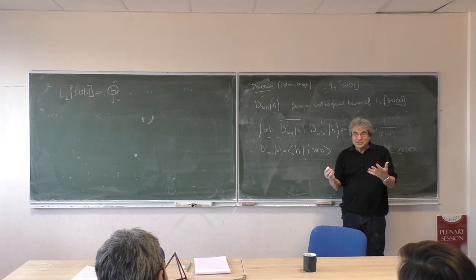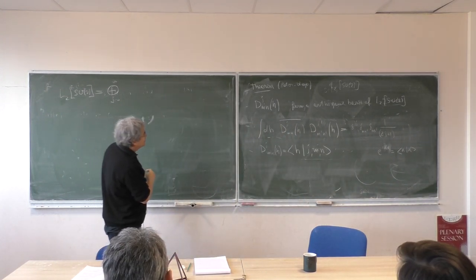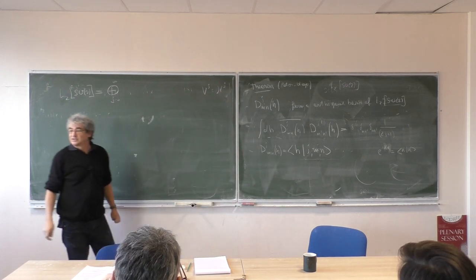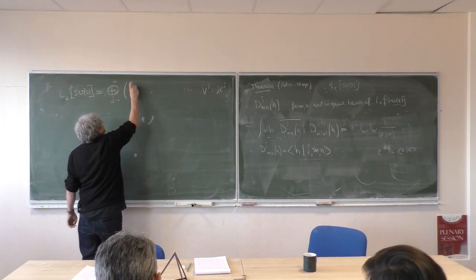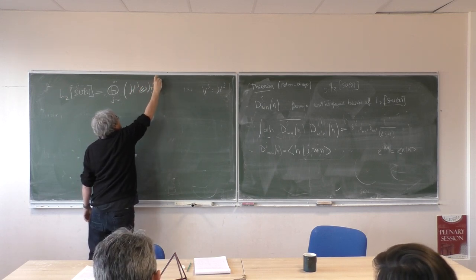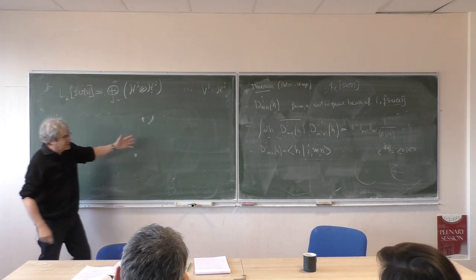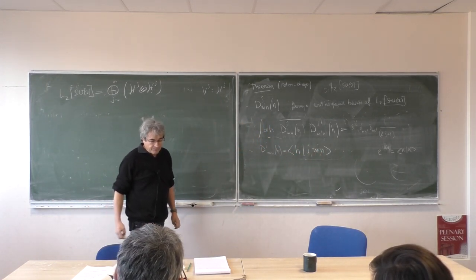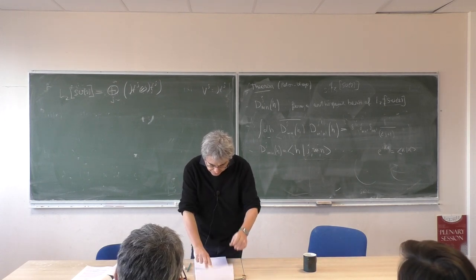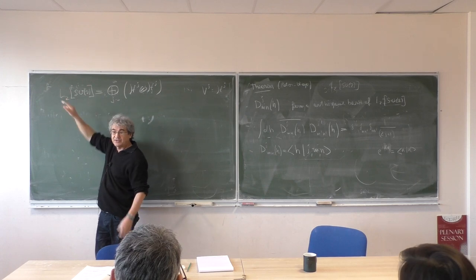What is this space? Well, this is a representation space in the representation J. It's what we called before V_J — it's probably better to call it H_J because it's a Hilbert space. These are unitary representations. So this is H_J ⊗ H_J. That's the structure. It's another way of saying the same thing. This notation will be very useful in a moment when we will have several of these spaces attached to one another.